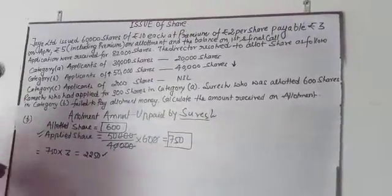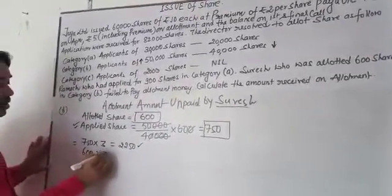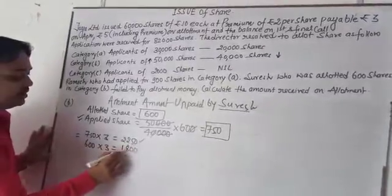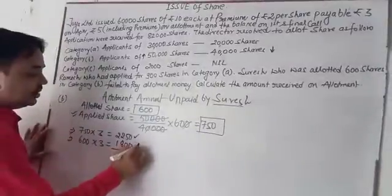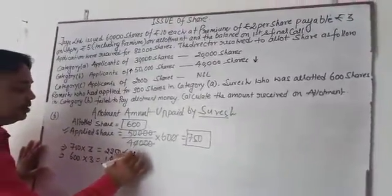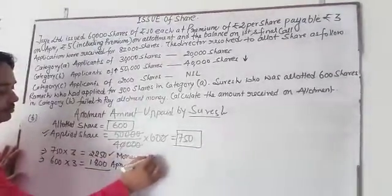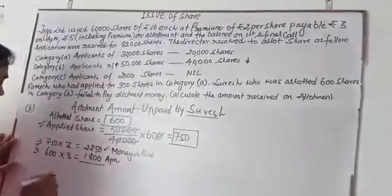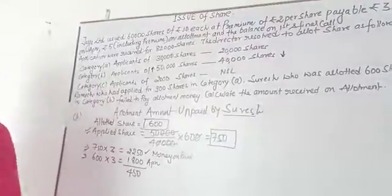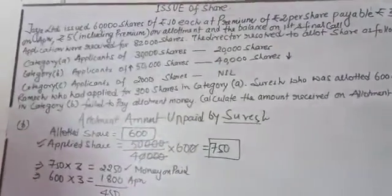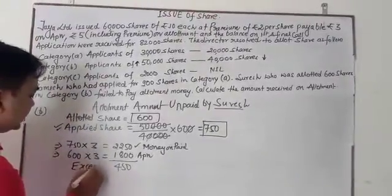Now what is the excess application money? The company allotted 600 shares, so 1,800 is going to be utilized for application money — that is the money paid on application. So what is the excess amount? That is 450 rupees. This excess amount is what the company wants to retain, and it will be utilized for the allotment.